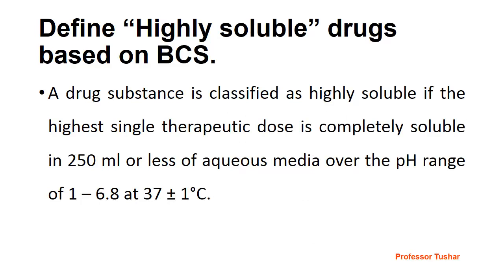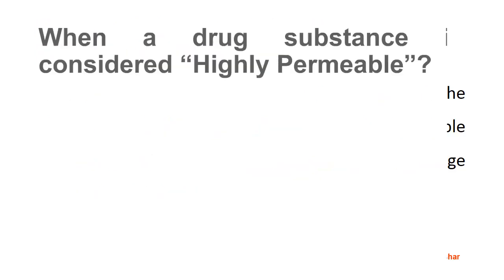Define highly soluble drugs based on BCS: A drug substance is classified as highly soluble if the highest single therapeutic dose is completely soluble in 250 milliliters or less of aqueous media over the pH range of 1 to 6.8 at 37 ± 1 degree Celsius.